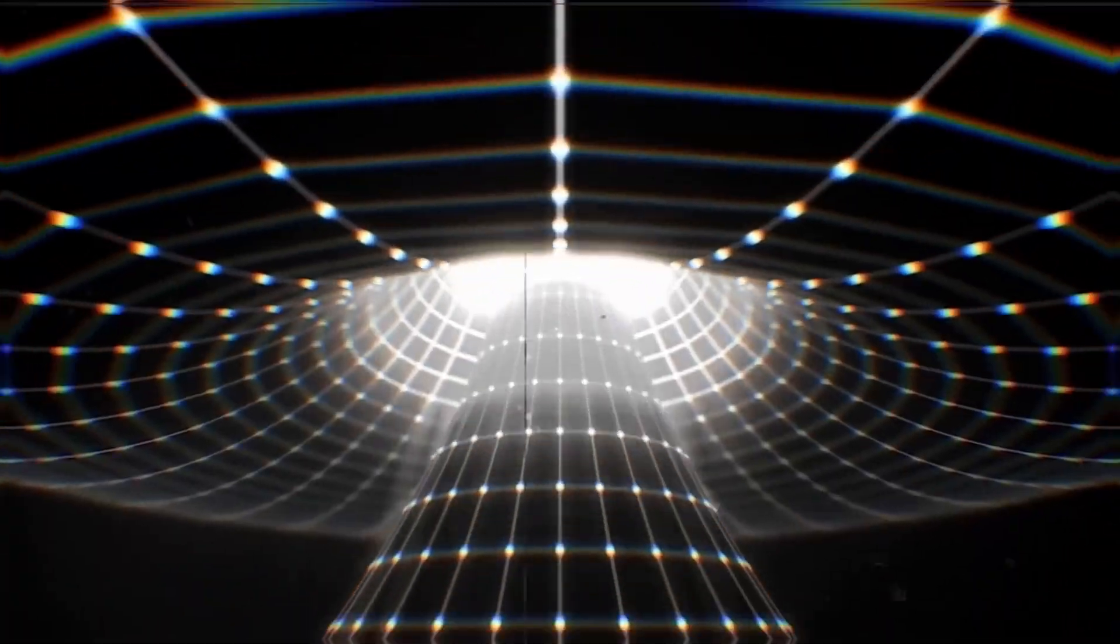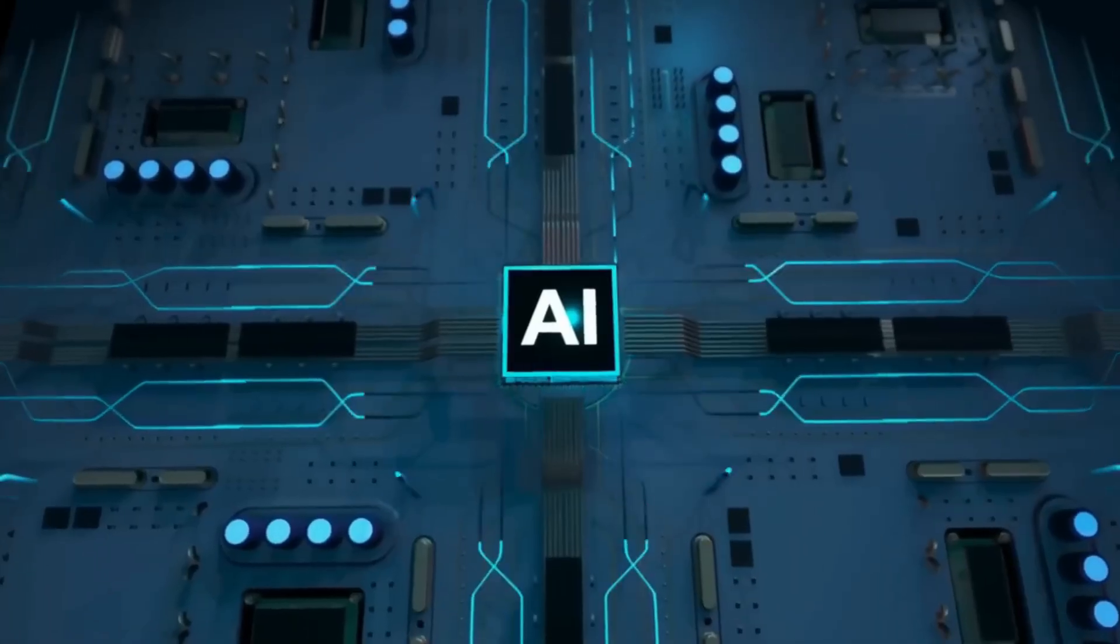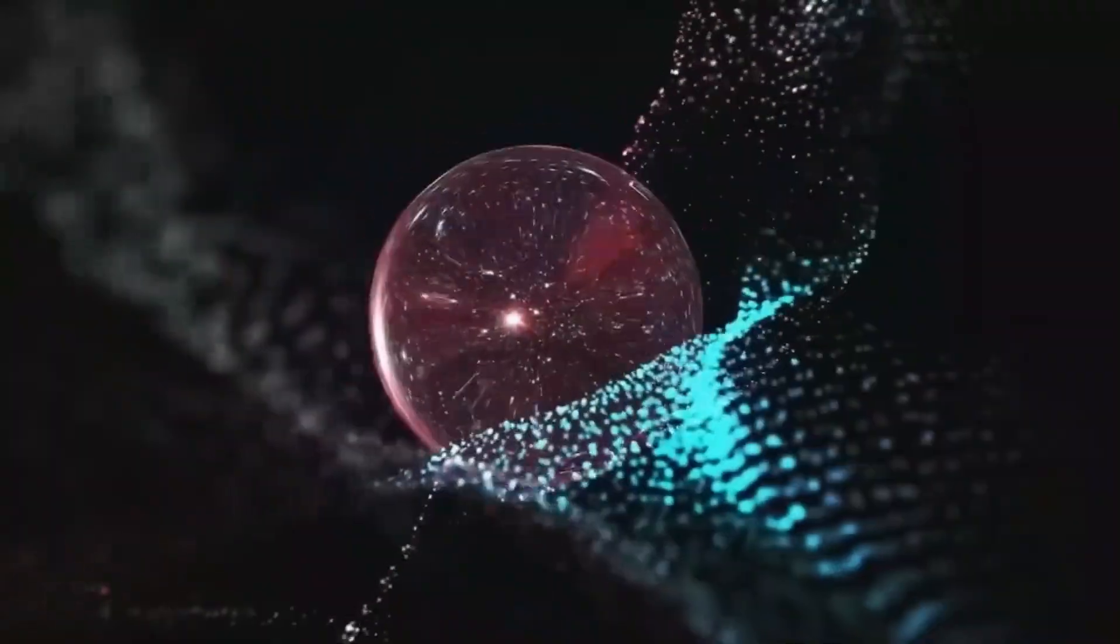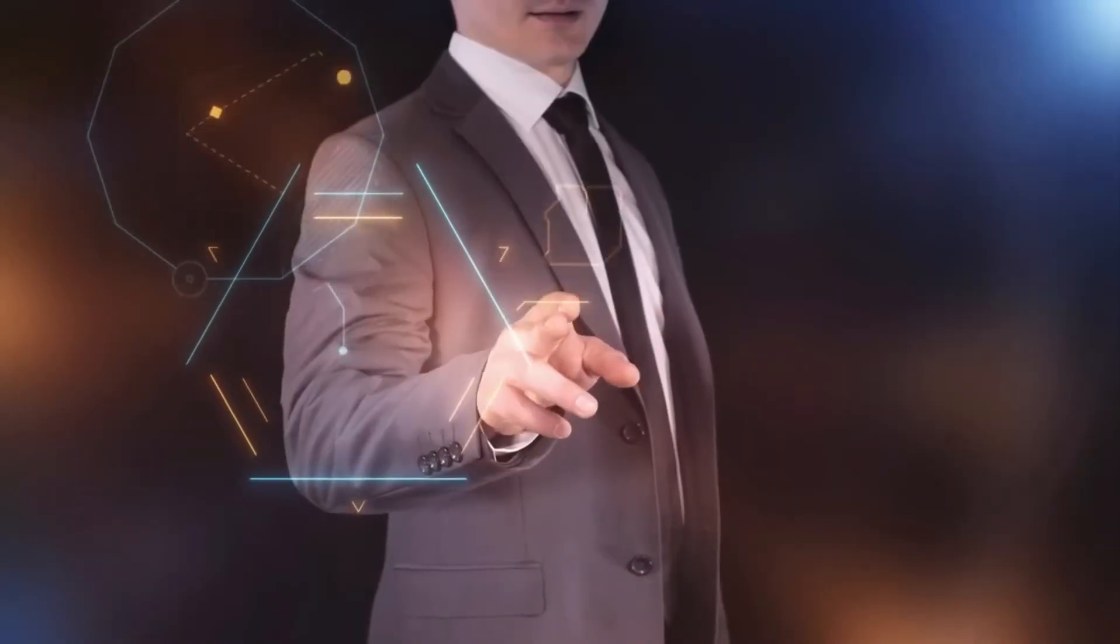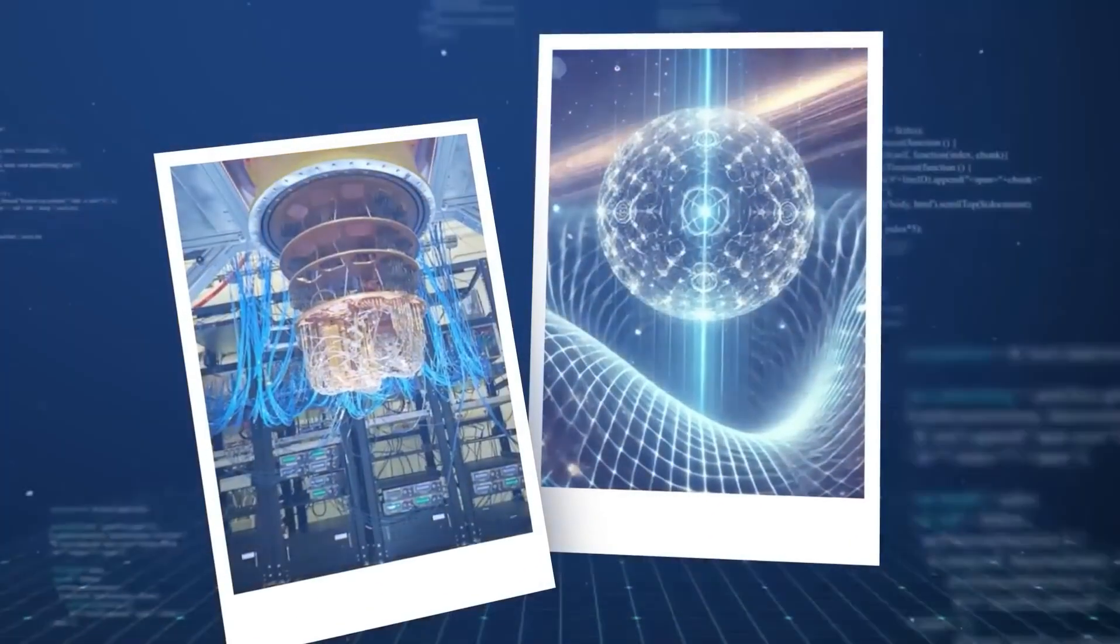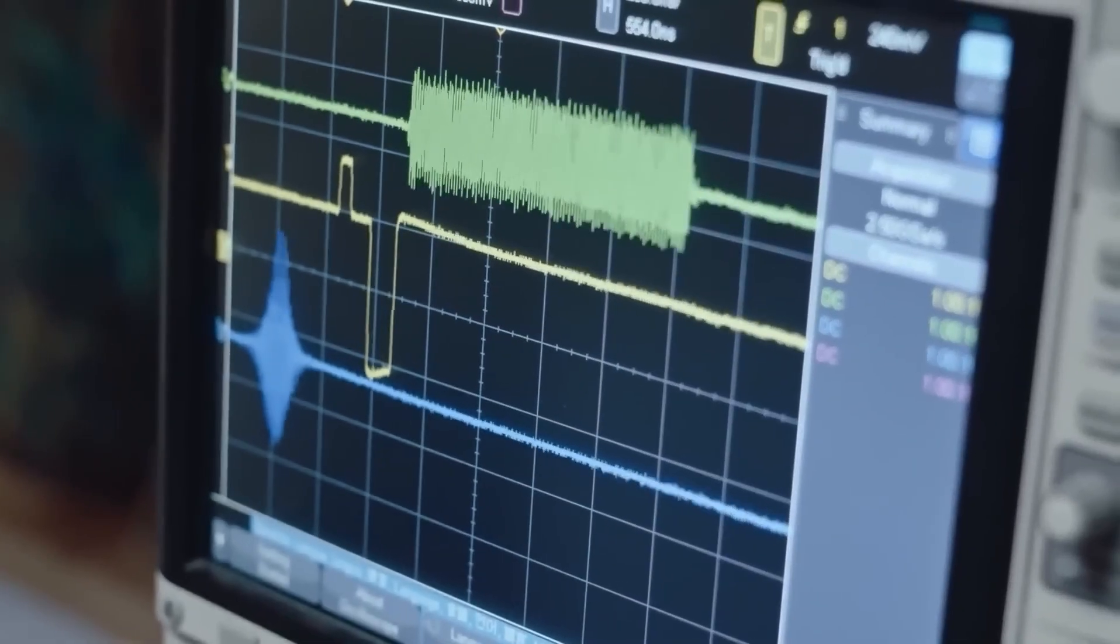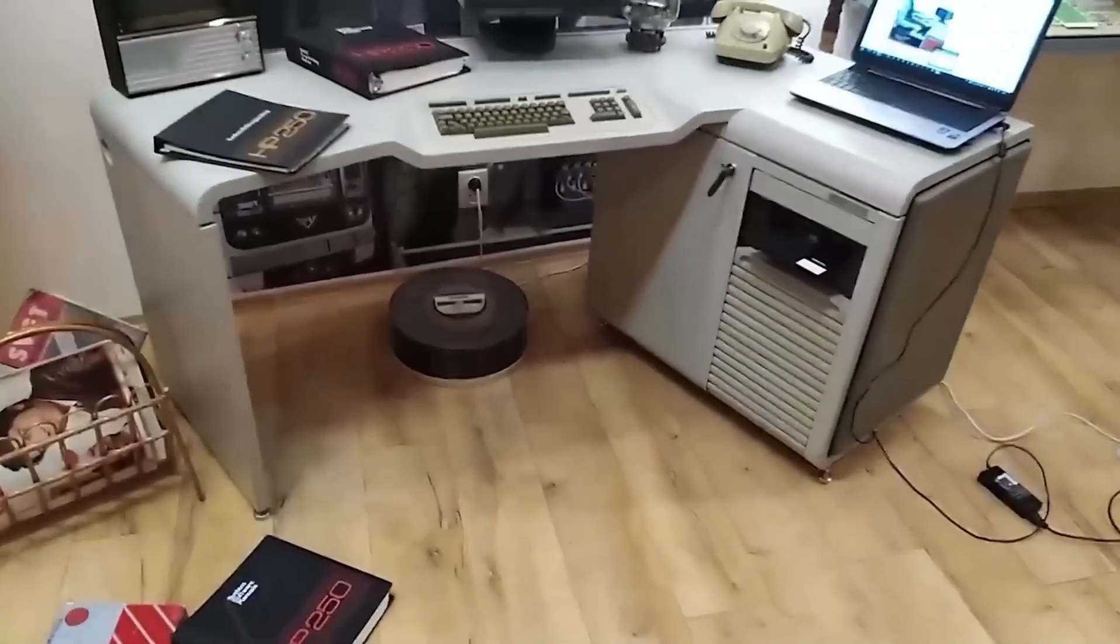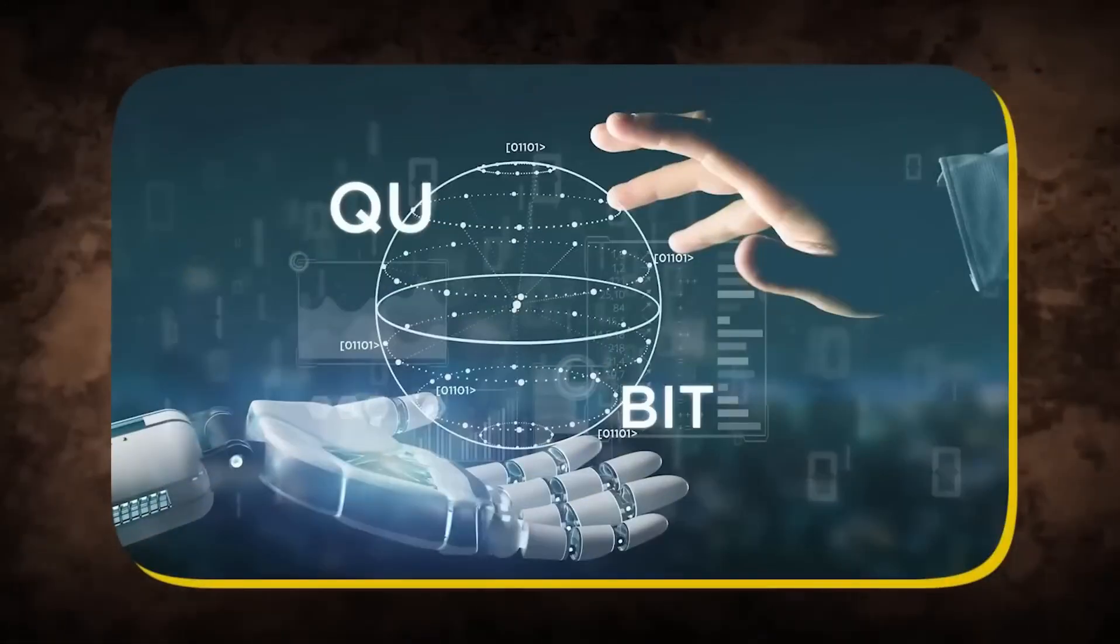Google's Willow quantum chip can solve problems in minutes that would take classical supercomputers billions of years to crack. When quantum computing merges with artificial intelligence, we enter uncharted territory where the fundamental properties of matter itself could potentially be manipulated. But what's the real story behind these claims? And just how concerned should we be? That's what we're diving into today.